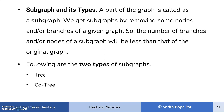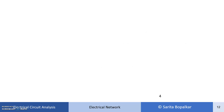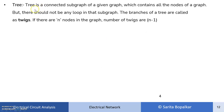Let's see the definition of tree and co-tree and how to draw them. A tree is a connected subgraph of a given graph — not just any subgraph, but a connected subgraph, meaning there exists a connection between all nodes, either direct or indirect, and it contains all the nodes of the graph. But there should not be any loop in the subgraph. The branches of a tree are called twigs. If there are n nodes in a graph, the number of twigs is n minus 1.